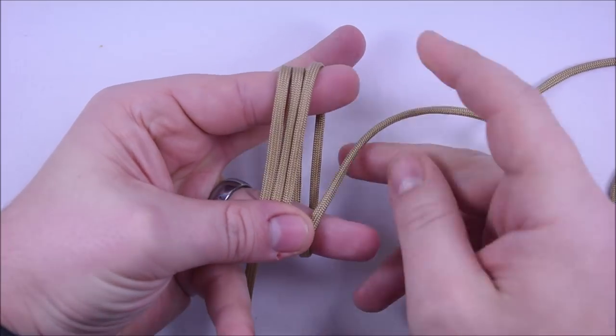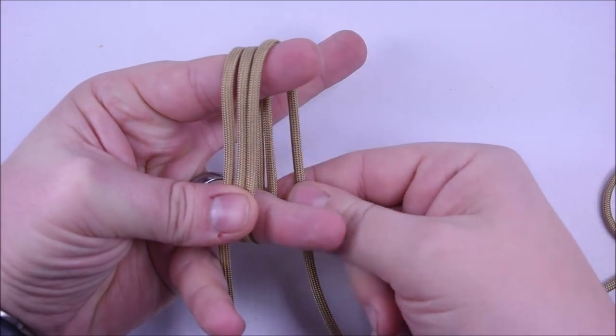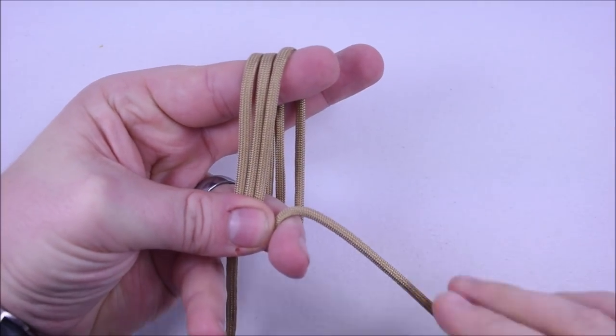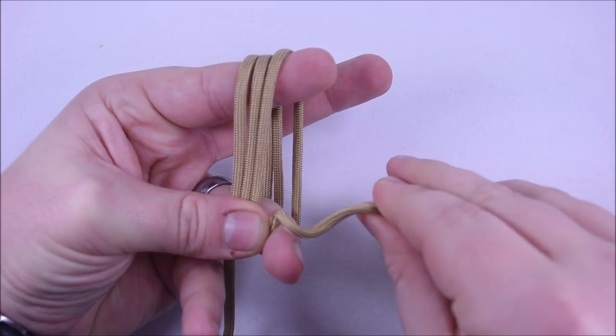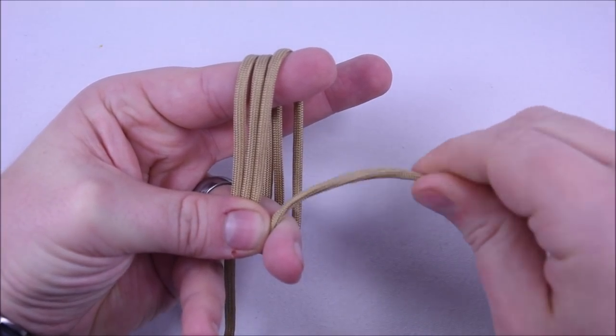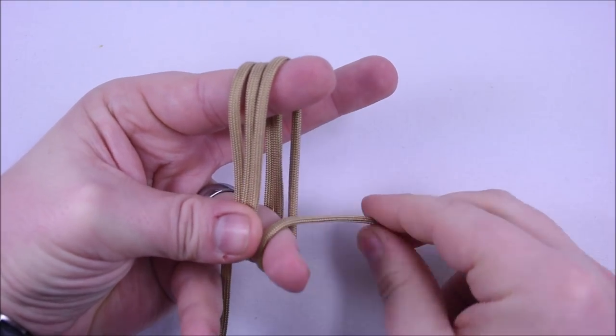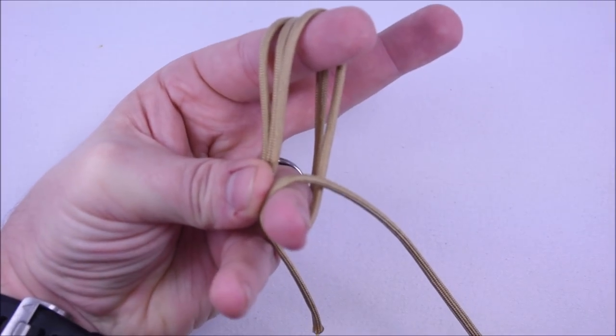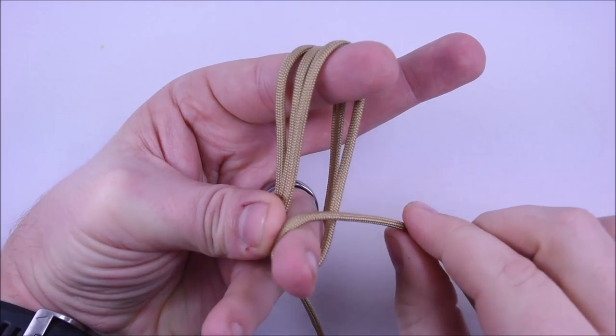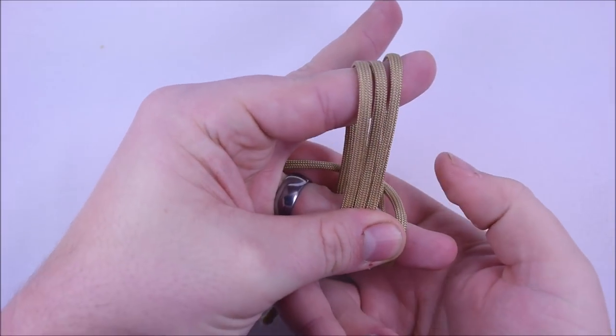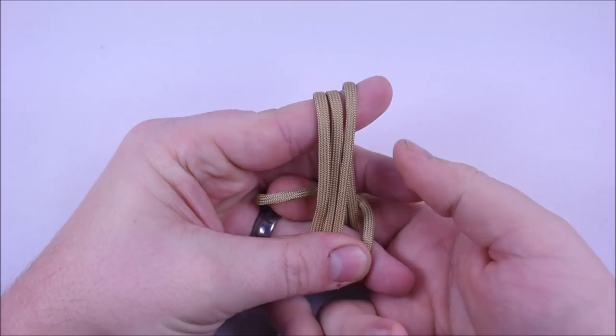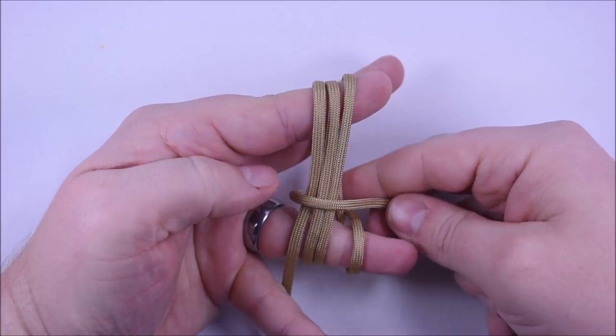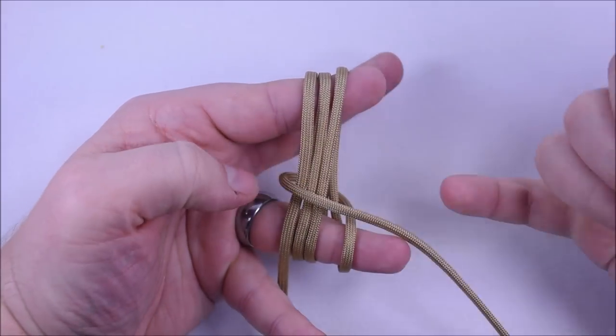So you do your last three pass here, and then you're going to wrap over. Make sure you get all the twists out of your cord too as you're going. You don't want those weird twists in there like that. So wrap over your last one like that. It's going to cross like this.